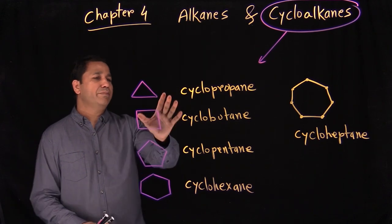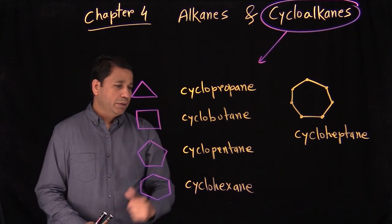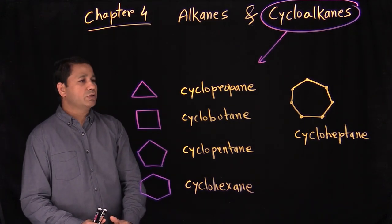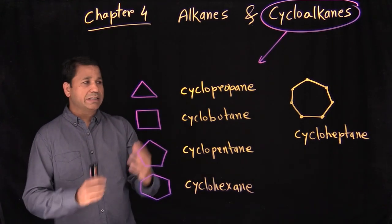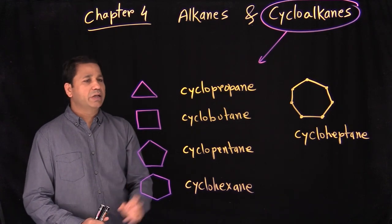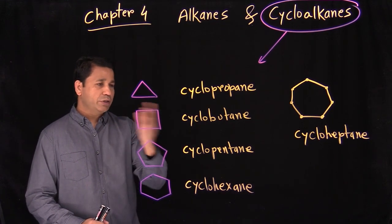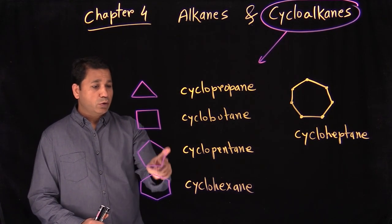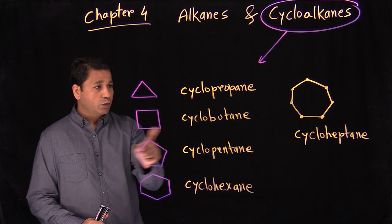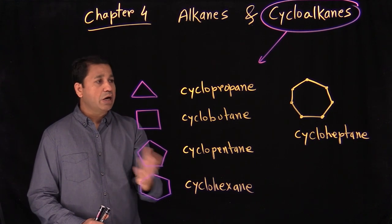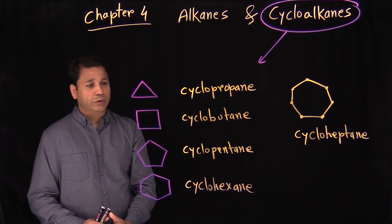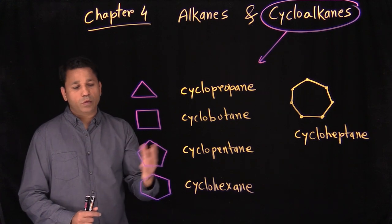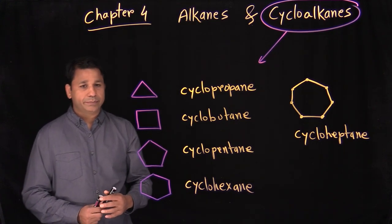So how do we name the cycloalkanes? The rules are still the same, but it's a little bit different from what we just saw. In this case, we don't have a chain — instead, we have a ring. Let's start with a simple example and build up slowly.